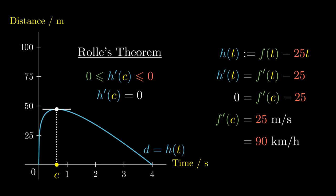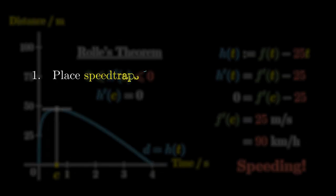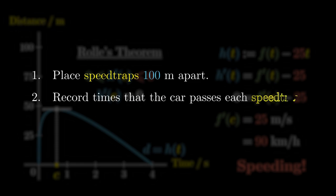In other words, there is a time c at which the car really was speeding. This means that our solution is to place the two speed traps 100 meters apart from each other, and take snapshots of cars passing through each point.